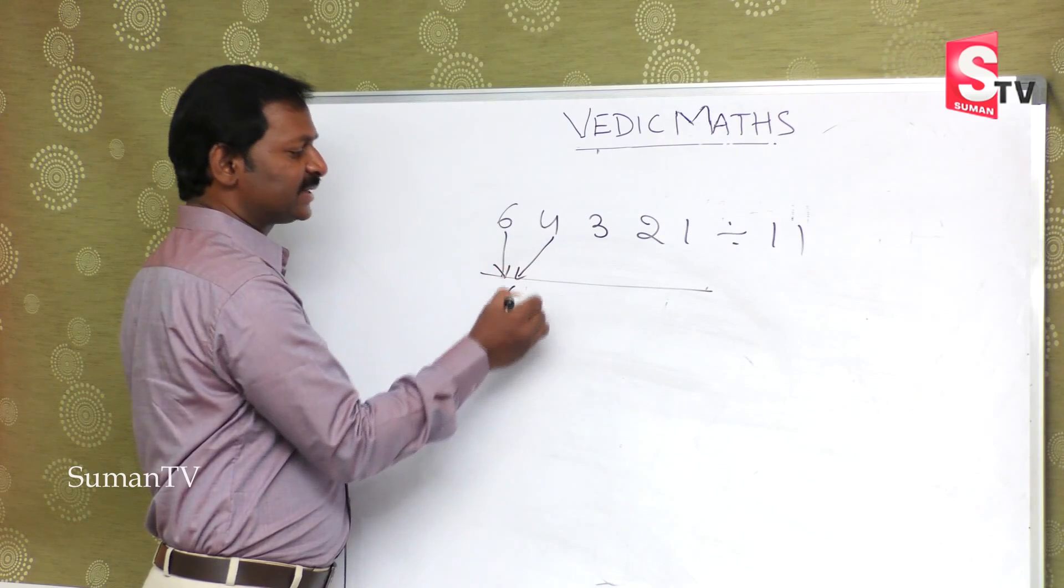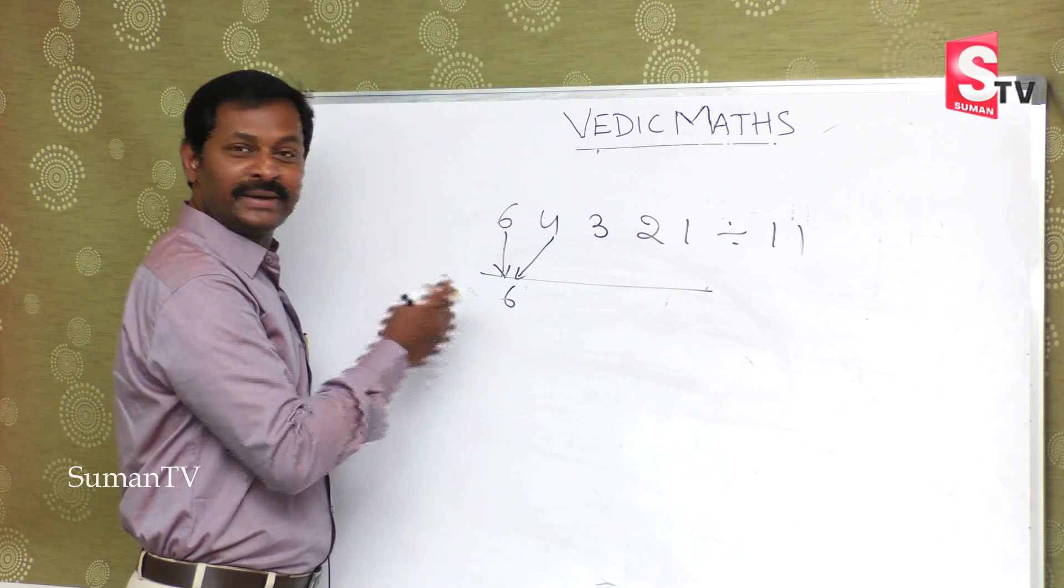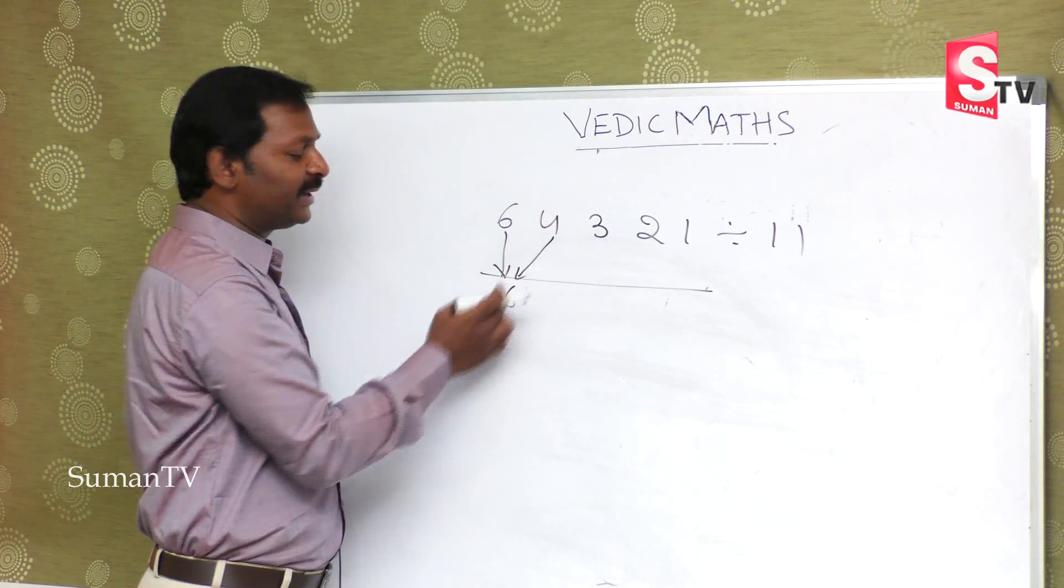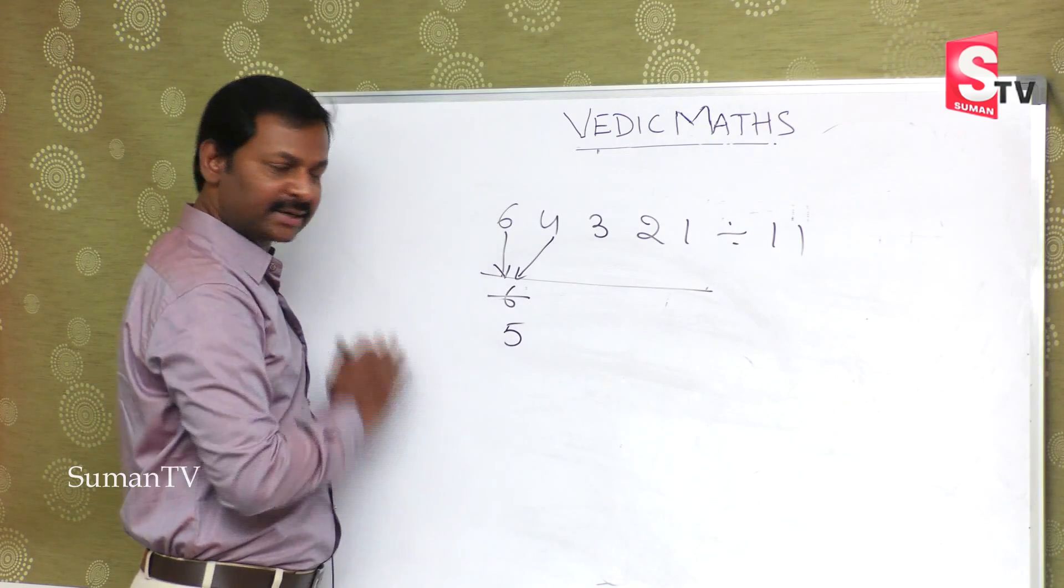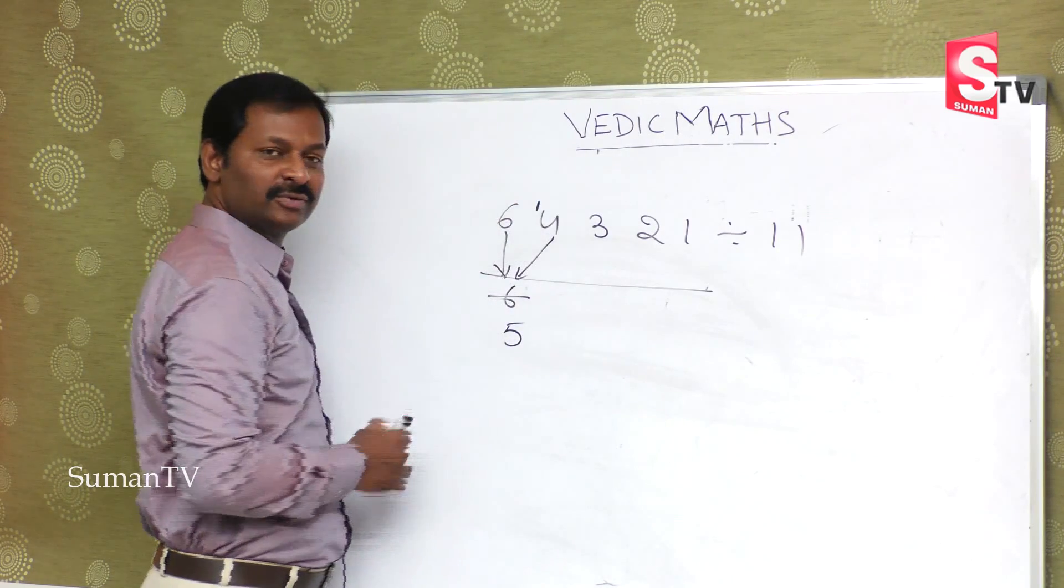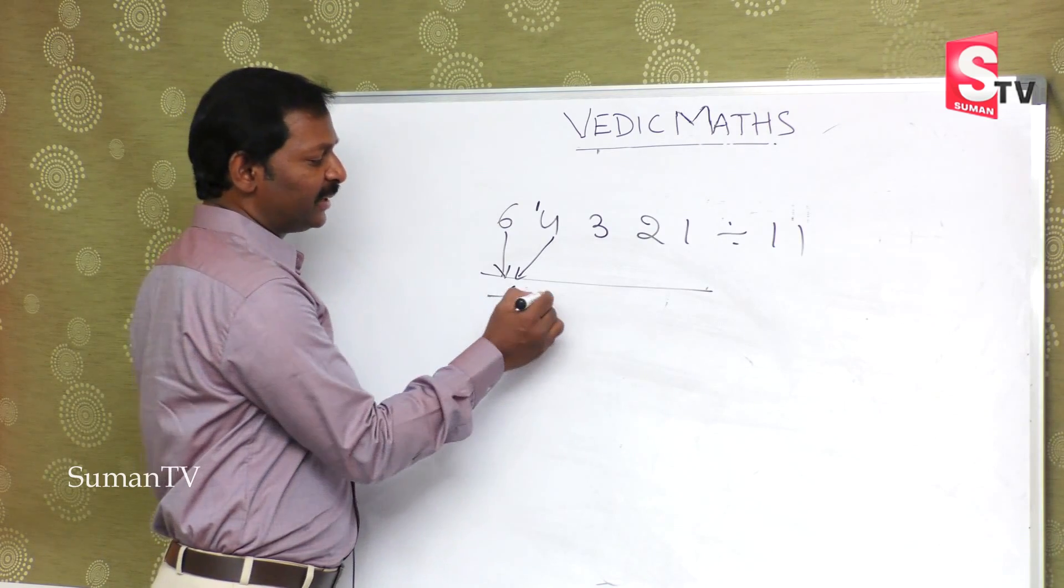4 minus 6 is minus 2, but in answers we will not write minus. That is why 4 minus 6 is not possible, so we decrease one number. One number decreased makes it 14 minus 6, that is 8.